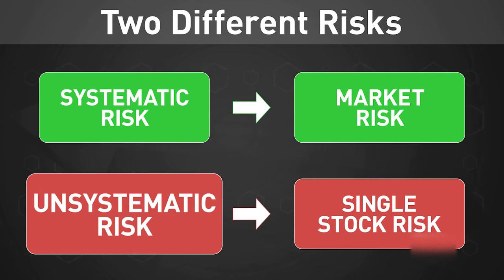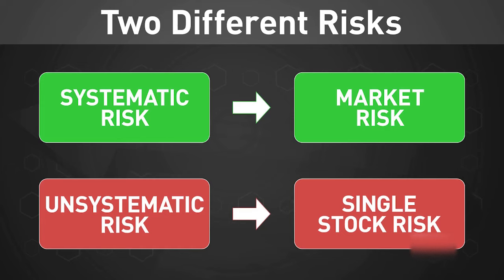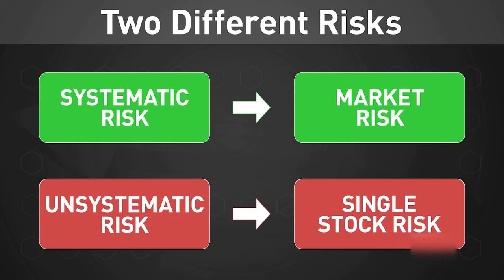Formally, the difference between indexes and individual stocks is referred to as systematic risk and unsystematic risk in the academic ranks of finance. Keep in mind that these labels are a lot more theoretical than they are practical, so as traders we need to slow ourselves down before we attach too much weight to them — but they are very useful for understanding the differences between indexes and individual stocks.